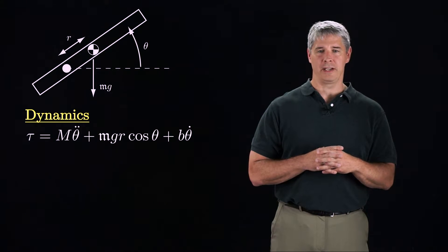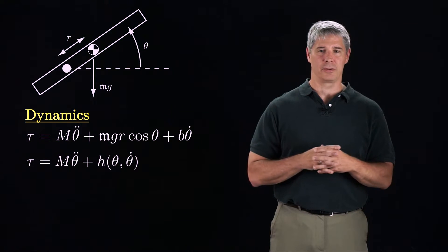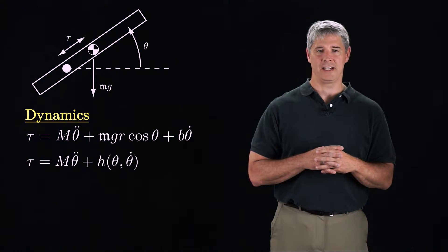Sometimes I'll lump together the gravity and friction terms to get tau equals m theta double dot plus h of theta theta dot.